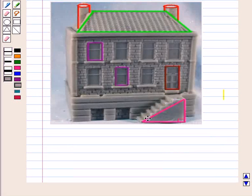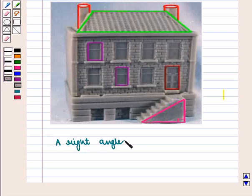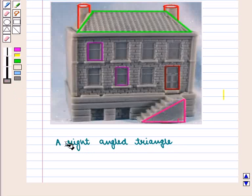Near stairs, we can also see a right-angled triangle. That is a two-dimensional figure.